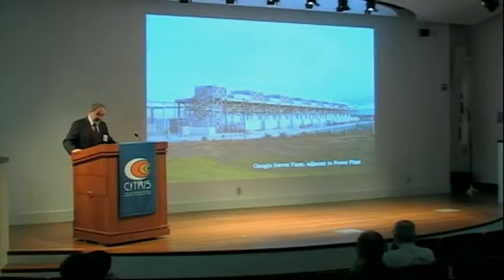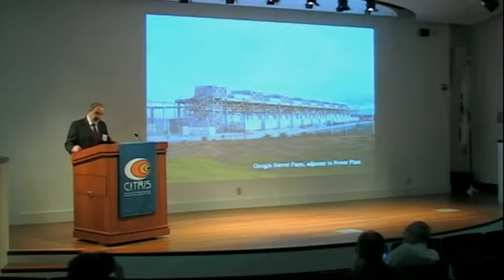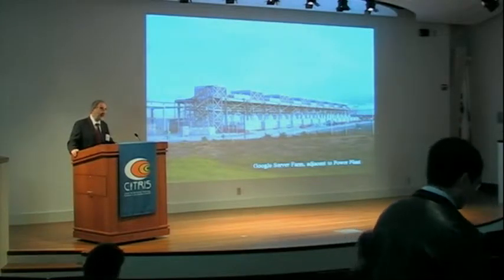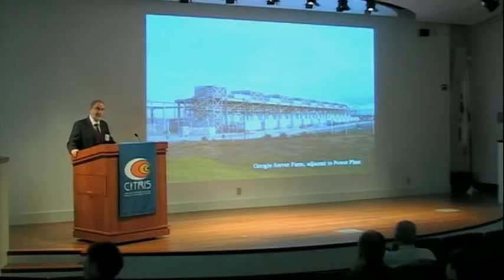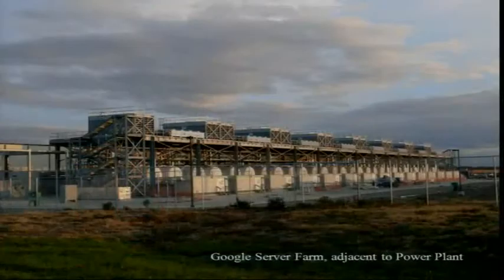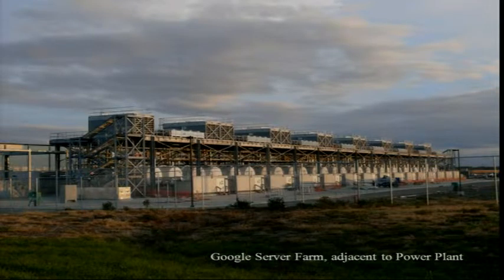What is this all about? It's all about the energy consumed in digital information processing. This is an example of a Google server farm — it's adjacent to a power plant, actually looks like a power plant — so it gives you some idea of what the problem is that we are trying to solve. We'll get a pretty good snapshot of where the technology is.